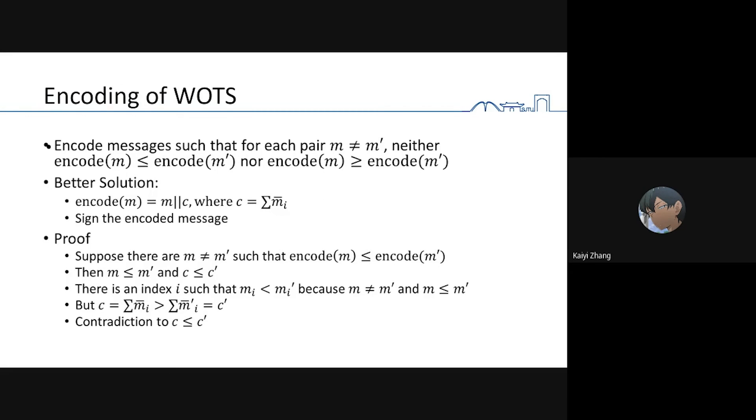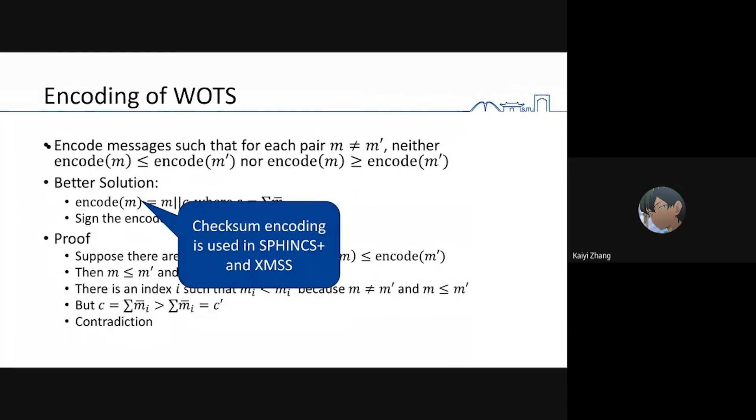There is a cleverer way to encode them. Instead of appending the complementary message, we append a checksum of the complementary message. We can also prove that if there are two distinct messages m and m prime such that they are comparable, there will be a contradiction. This checksum Winternitz one-time signature encoding is used in SPHINCS and Christmas.